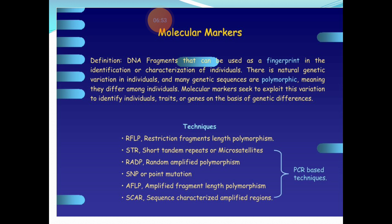Molecular markers seek to exploit this variation to identify a particular individual, trait, or genes on the basis of genetic differences. Normally we make use of RFLP, RAPD, AFLP — these are various molecular marker techniques. Most of them, except for RFLP, are PCR-based techniques.